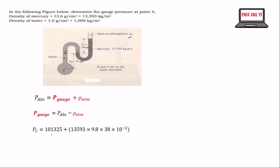After getting that, we have this plus rho·g·h. The density of the mercury was given to us as 13,593 kg per meter cubed. We now do substitution, and since we are using meters, we convert centimeters to meters by multiplying by 10 to the exponent negative 2.